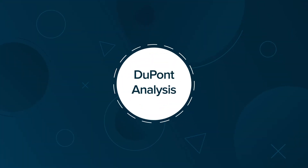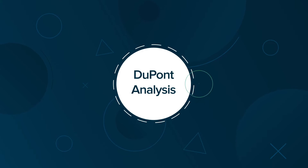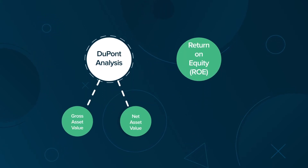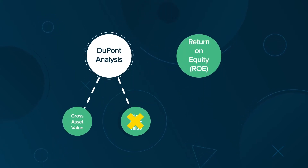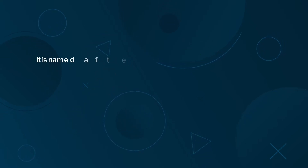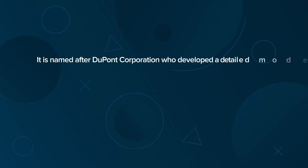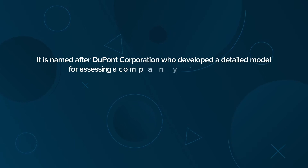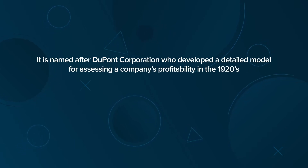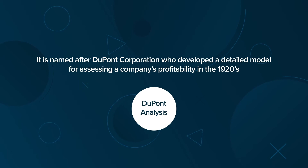DuPont Analysis is a modification of Return on Equity, or ROE, which uses a gross asset value rather than net asset value in its calculation. It is named after DuPont Corporation, who developed a detailed model for assessing a company's profitability in the 1920s, later named DuPont Analysis.